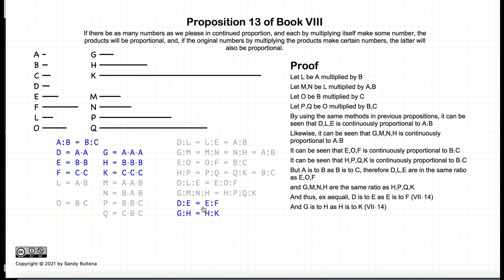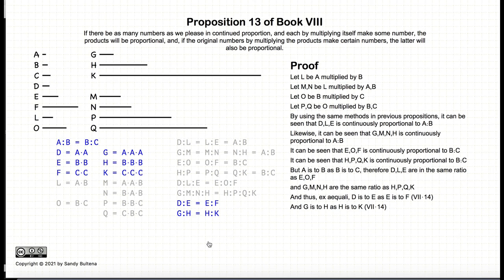So we have that d:e = e:f and g:h = h:k. Now, d, e, and f are a², b², and c², and g, h, and k are a³, b³, and c³. Thus, we started with a:b = b:c, and we have shown that a²:b² = b²:c², and we have also shown that a³:b³ = b³:c³. And thus, we have demonstrated the veracity of this proposition.